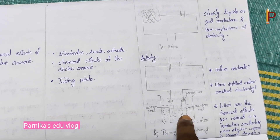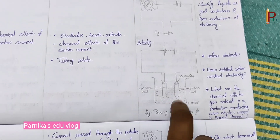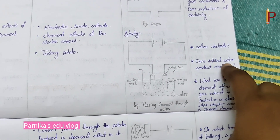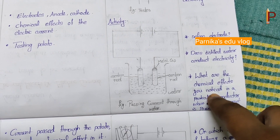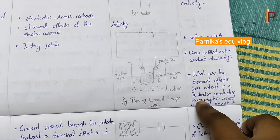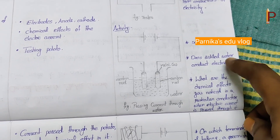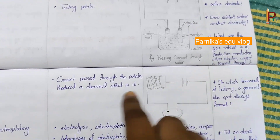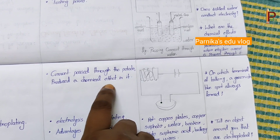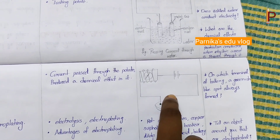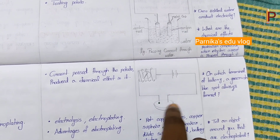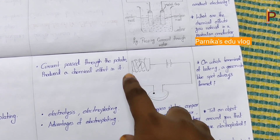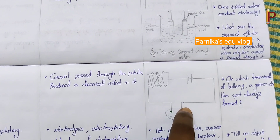This is the passage of current through water activity. In the next column, we have to write: define electrode; does distilled water conduct electricity?; and what chemical effects do you notice in a particular conductor when electric current is passed through it? Next, current passed through the potato produces a chemical effect. We need to conduct an activity using a potato, and we can observe a greenish-blue spot always formed at the positive terminal of the battery. That is what we have to show to the students.